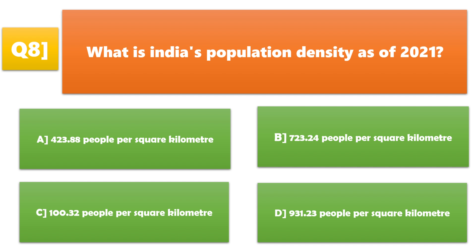What is India's population density as of 2021? A. 423.88 people per square kilometer, B. 723.24 people per square kilometer, C. 100.32 people per square kilometer, D. 931.23 people per square kilometer. A. 423.88 people per square kilometer is the correct answer.